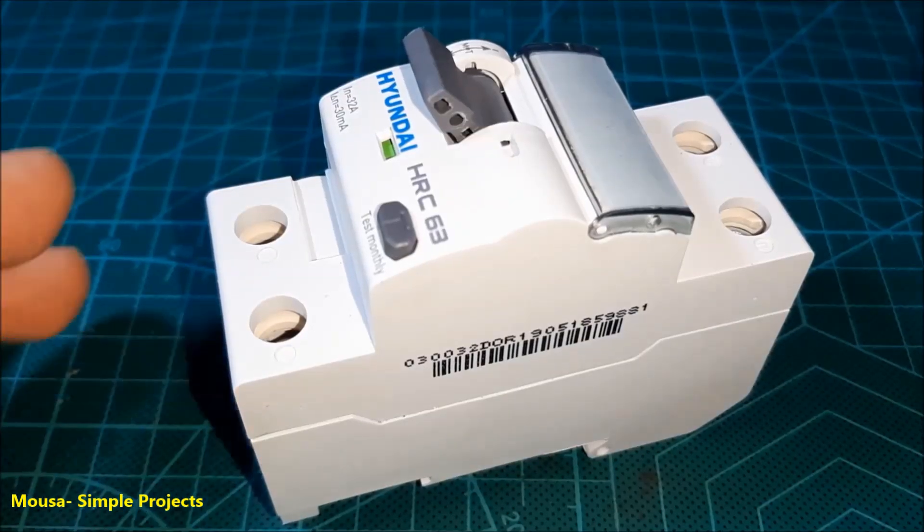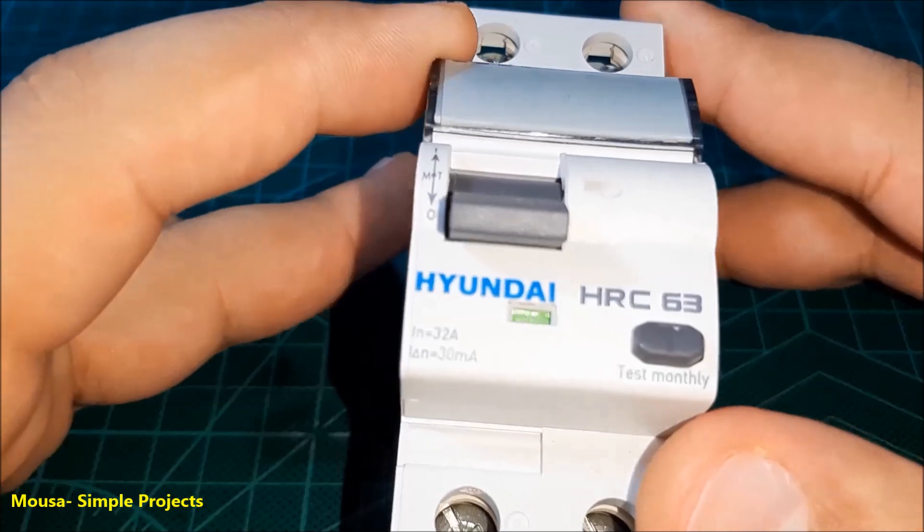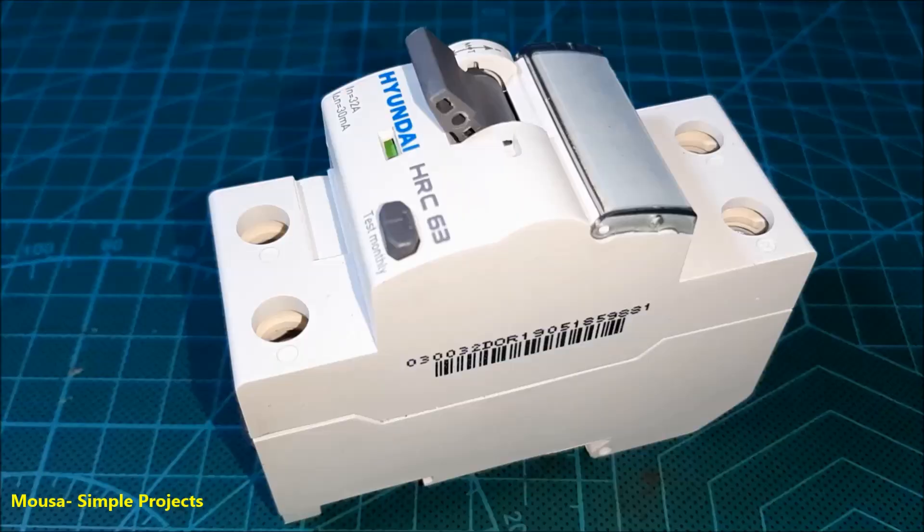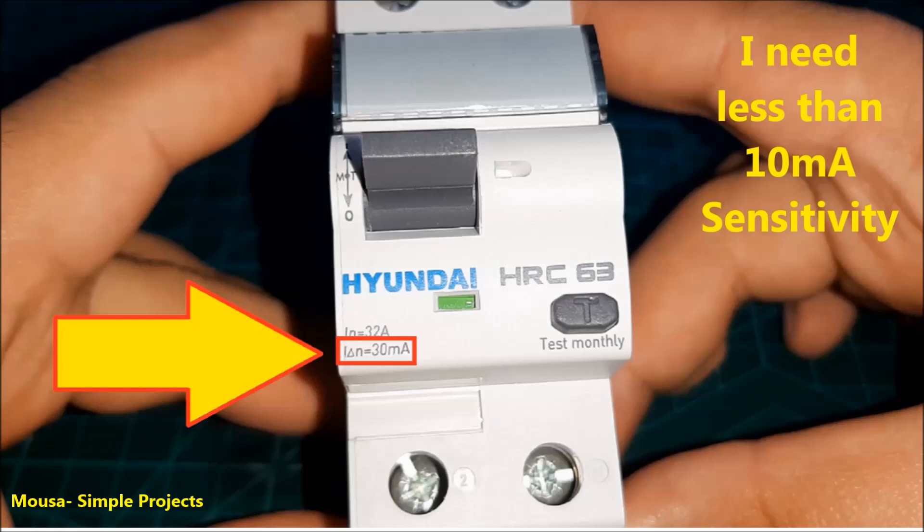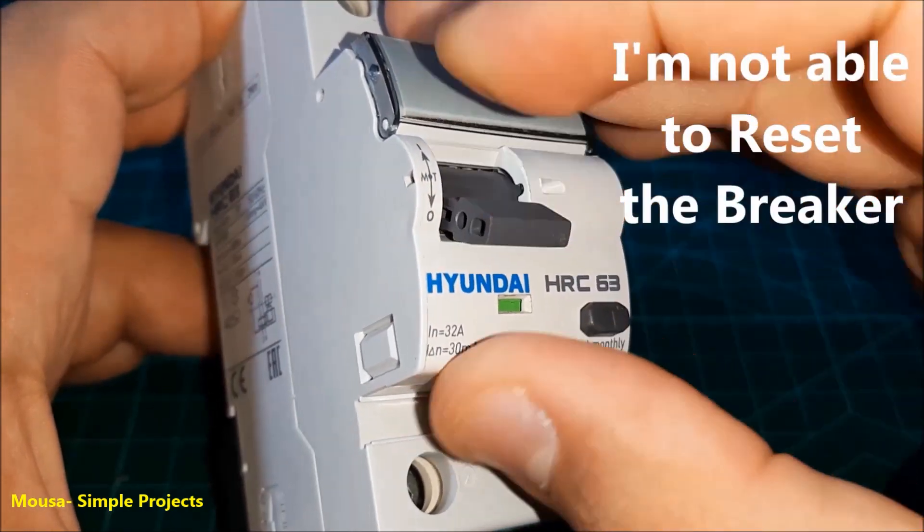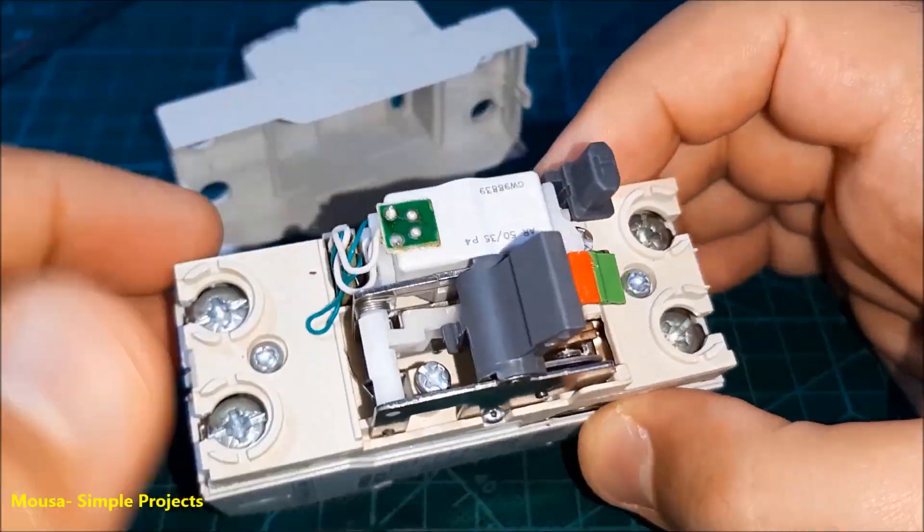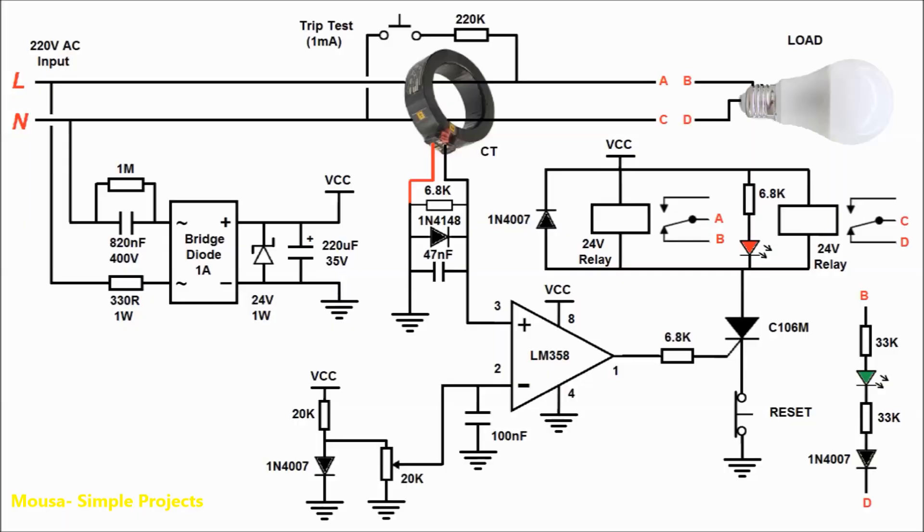You can buy it for less than 15 bucks, but there are two reasons that forced me to make my own. First, I can't find high-sensitivity RCD in the markets. Second, my RCD stopped working after a few months, and because it uses a complex mechanical switch, it's very difficult to repair.